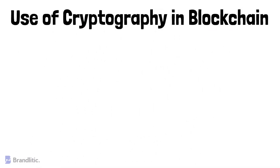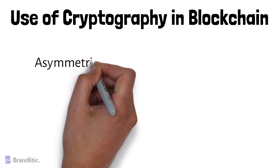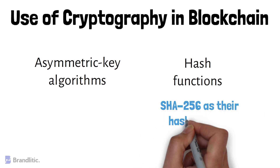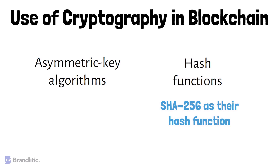Let's discuss the use of cryptography in blockchain. Blockchains mainly make use of two types of cryptographic algorithms: asymmetric key algorithms and hash functions. Hash functions are used to provide functionality of a single view of blockchain to every participant, and generally blockchains use the SHA-256 hashing algorithm as their hash function.